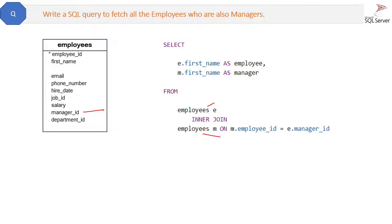We are using different alias names — one is E and one is M. When we join on M dot employee ID equal to E dot manager ID, this will give us the list of the employee first name and the manager first name.